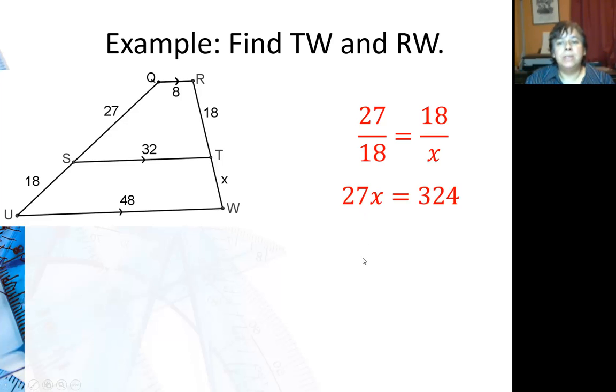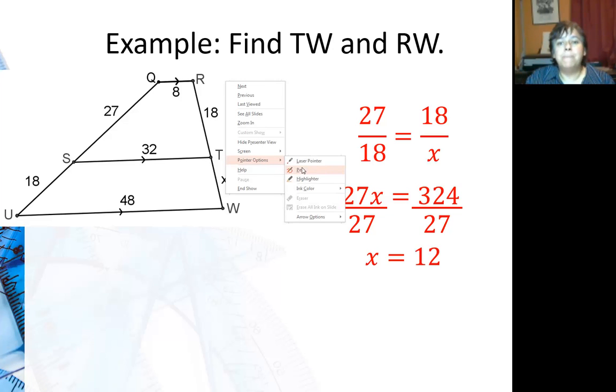Then we'll cross multiply. 27X equals 324. Divide both sides by 27, and I get X is 12. So that means TW is 12, and RW right here will be 30.